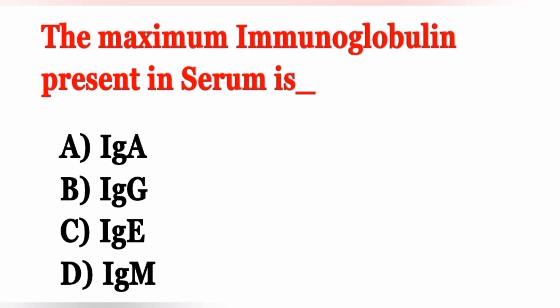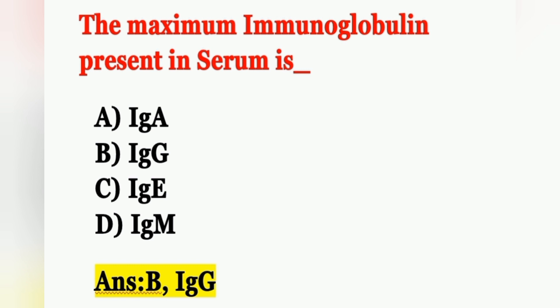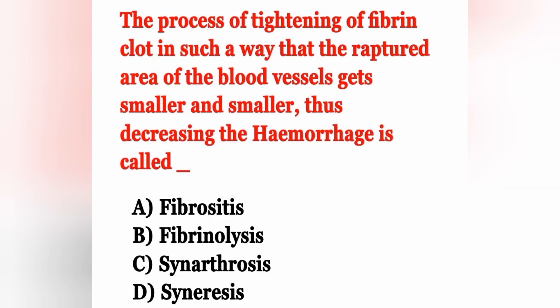Next question: The maximum immunoglobulin present in serum is — Option A: IgA, Option B: IgG, Option C: IgE, Option D: IgM. The correct answer is Option B, IgG. IgG is the most common immunoglobulin, constituting about 70% of all total immunoglobulins, and is the principal immunoglobulin present in human serum.